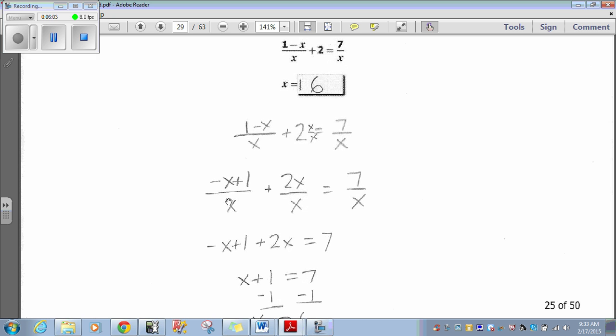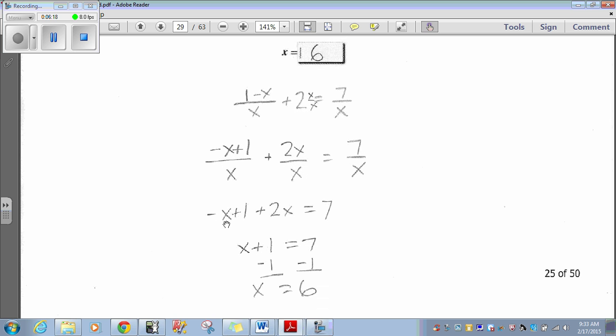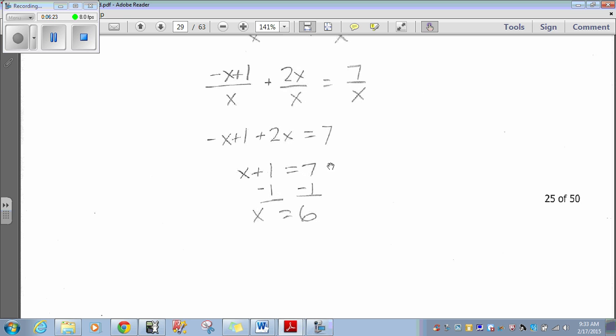I just switched it around over x. It's the same thing. Plus 2x over x equals 7 over x. Now that all the denominators match, I can drop the denominators and just deal with my numerators. So, now I have negative x plus 1 plus 2x equals 7. Then, if I combine like terms, that's simply x plus 1 equals 7. Right? Because the negative x plus 2x is just x.